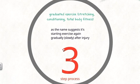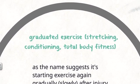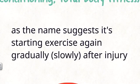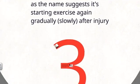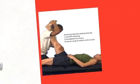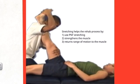Progressive mobilisation helps reduce the amount of scar tissue at the injured site. The next dash point is graduated exercise, a three-step process including stretching, conditioning, and total body fitness. As the name suggests, it involves starting exercise again gradually after the injury. The first step is stretching, which strengthens the muscle and helps return the injured area to a full range of motion. The recommended form is PNF stretching, where you are assisted in the stretching process.